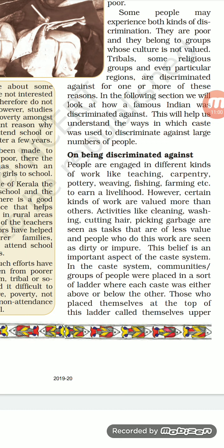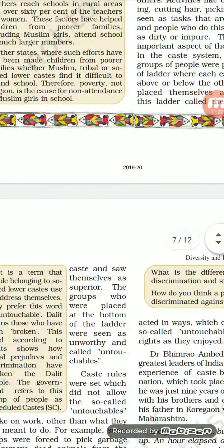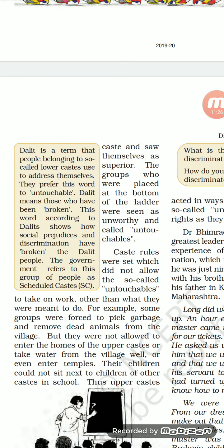This belief ties to the caste system. In this system, communities were placed on a kind of ladder where each caste was either below or above others. Those who placed themselves at the top considered themselves the upper caste and saw themselves as superior. For example, Brahmins used to feel that because they know the Gita and the manuscripts, they are the superior ones, while those who wipe floors or pick garbage always belong to the lower class.